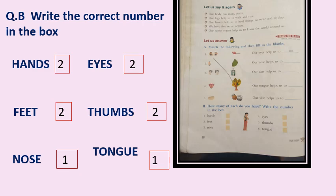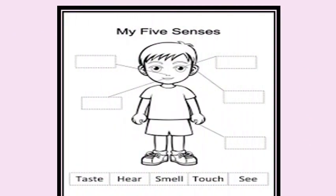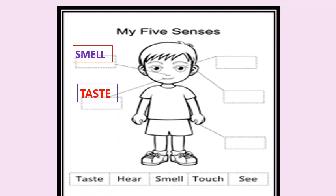Now we are doing an oral worksheet. In the picture they have labelled the five senses. First, pointing to the nose - the sense is smell. Second, pointing to the mouth - the sense is taste, because we eat through the mouth and taste through the tongue. Third is eyes - see. Fourth is ears - hear. And the last they are showing fingers - touch. So those are the five senses.